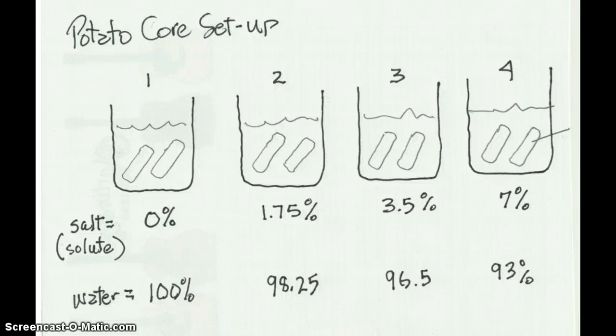In this video I'm going to help you with the potato core part of lab number four. Now if you've already set it up, it should look something like this crude diagram here. You have four cups set up. In the first cup you have put some distilled water. If that water is distilled, it means it's 100% water. It has no solutes in it at all.